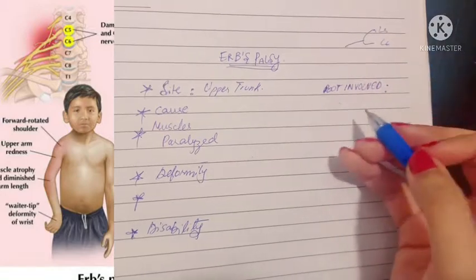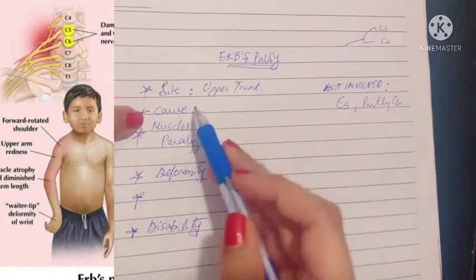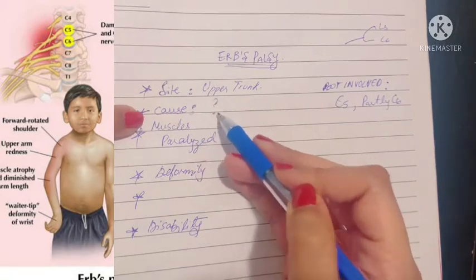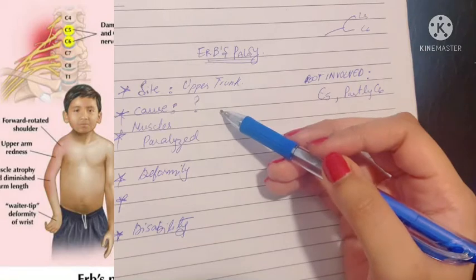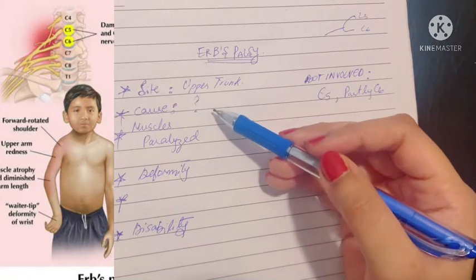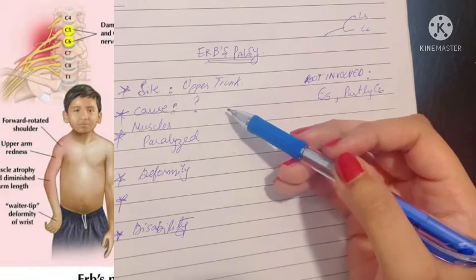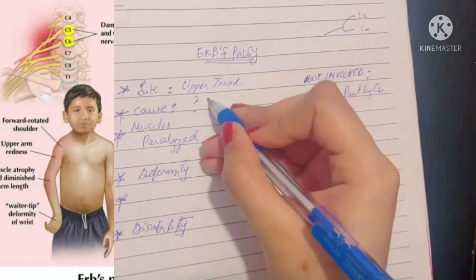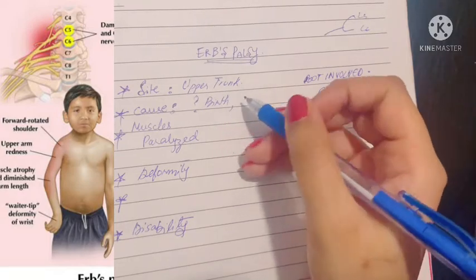How does this damage occur? Whenever there is undue separation or hyperextension of the neck that results in the head and shoulder being separated from one another, the upper trunk of the brachial plexus is damaged. This usually occurs during birth or when a person falls in a motorcycle accident on their shoulder.